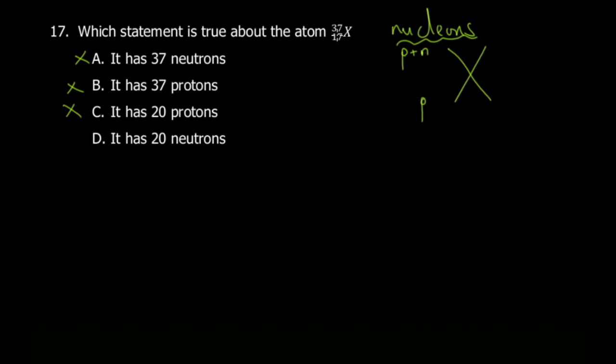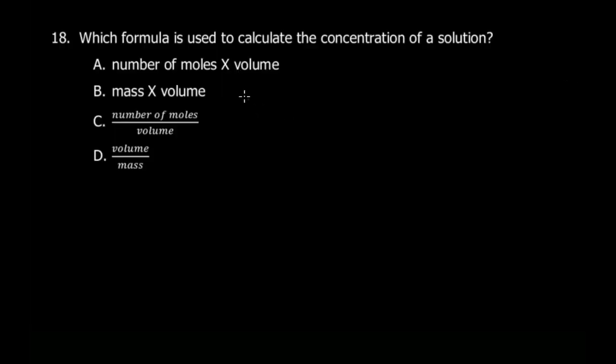It's protons plus neutrons, so 37 nucleons. Nucleons simply means residents of the nucleus, they're called nucleons. There are 37 of them. It has 20 protons - protons we said is this number here - so obviously it can't be that. It has 20 neutrons: if you have 17 protons and you subtract from 37, you get 20 neutrons left. That's why it's D.